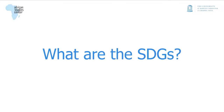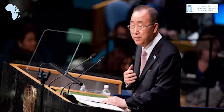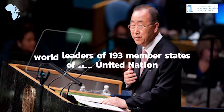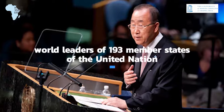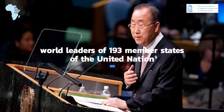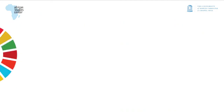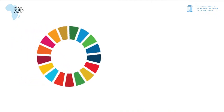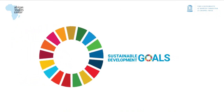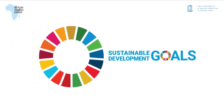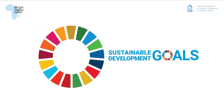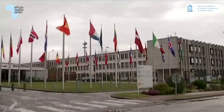What are the SDGs? In 2015, world leaders of 193 member states of the United Nations agreed to 17 global goals, officially known as the Sustainable Development Goals, and pronounced SDGs.